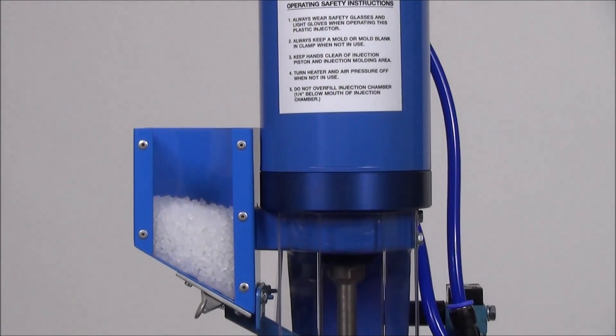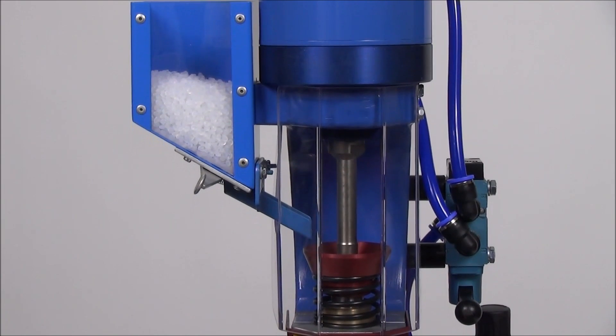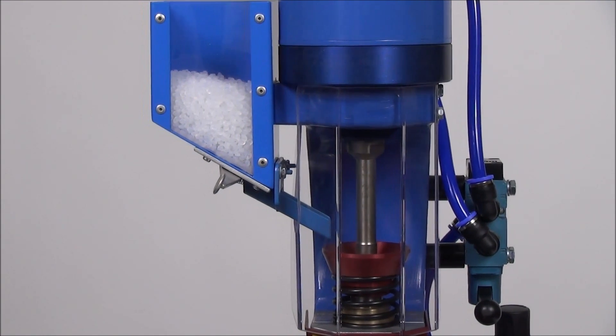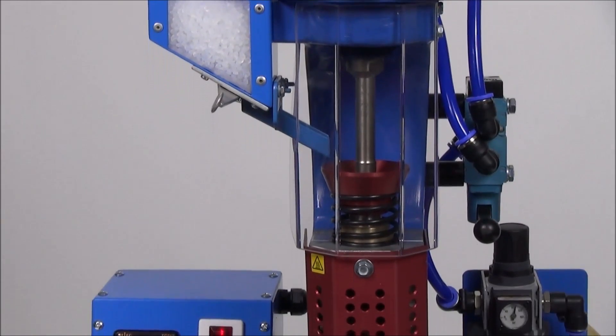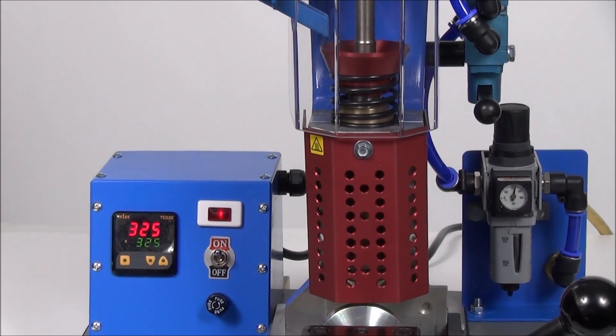Directly underneath the injection cylinder and behind the transparent safety guard are the stainless steel piston and injection chamber funnel entrance. Below this and behind the safety red heat shield is the heated stainless steel injection chamber. The area below this will be the area for your mold.